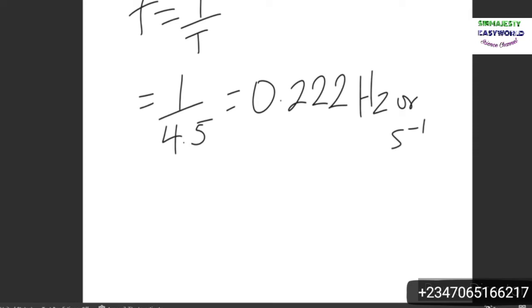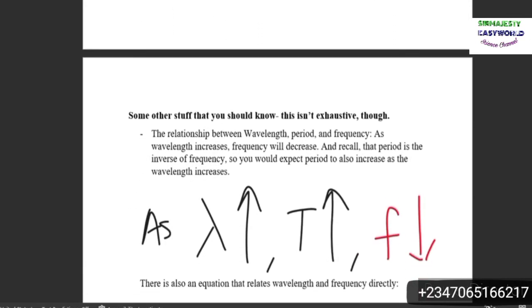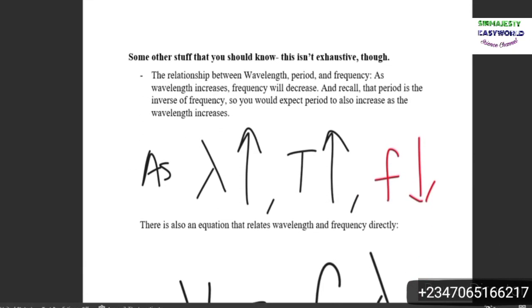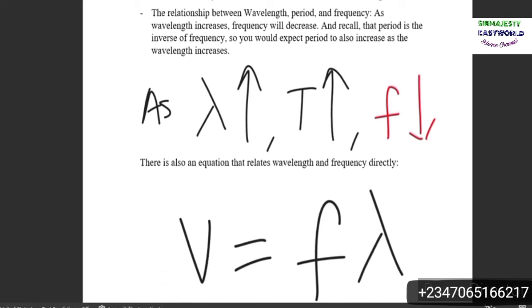Moving on, there's a few more things to talk about in terms of waves. This isn't an exhaustive list, but it's a good place to start. There's a relationship between the wavelength, period, and frequency. As the wavelength increases, frequency will decrease. Recall the period is the inverse of frequency, so expect period to increase as wavelength increases. Once again, as wavelength increases, the period will increase and the frequency will decrease.